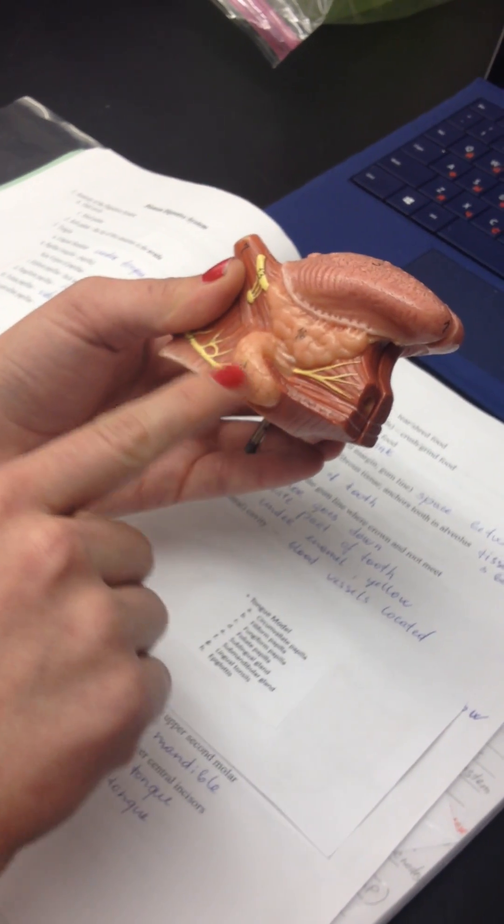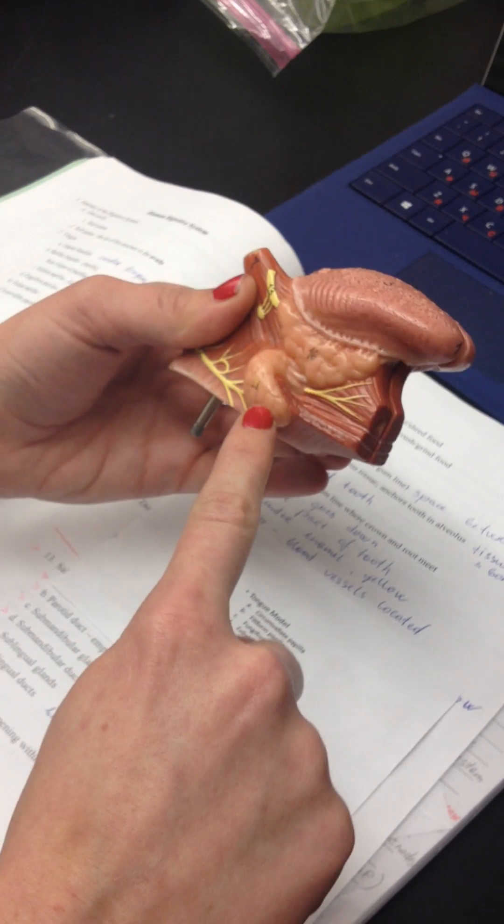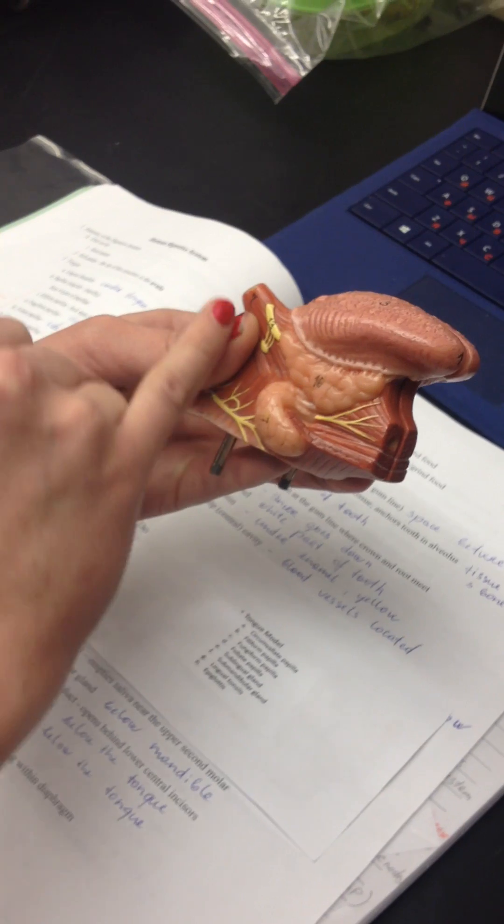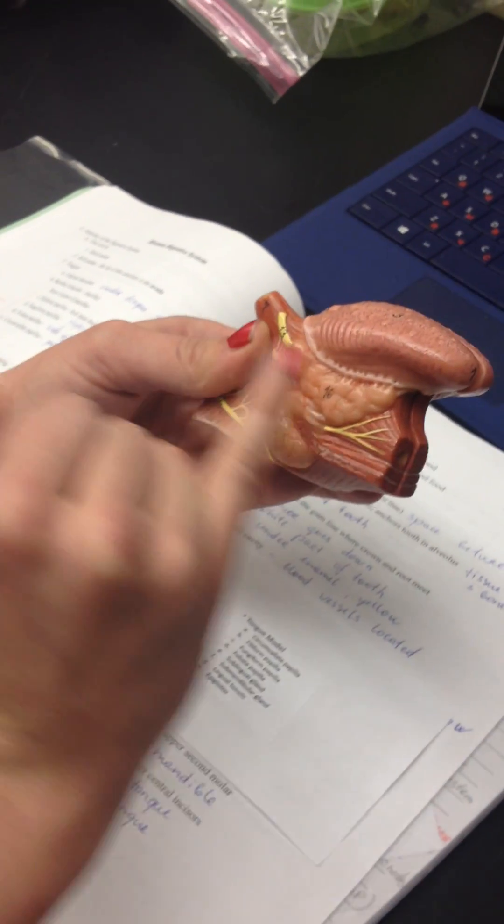Then you have this one. This is going to be your submandibular gland. That just means underneath the mandible. Your mandible is going to sit right about here.